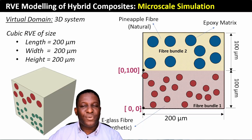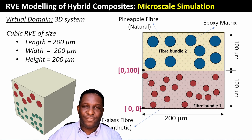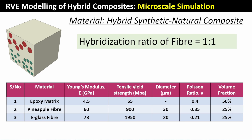This is the kind of model you have and you want to see how to undertake a tensile deformation of it. The key points to note are the points that determine the origin of the two layers. The material properties we're going to work with include the epoxy, pineapple, and e-glass fiber in terms of Young's modulus, yield stress, diameter, Poisson's ratios, and volume fraction.